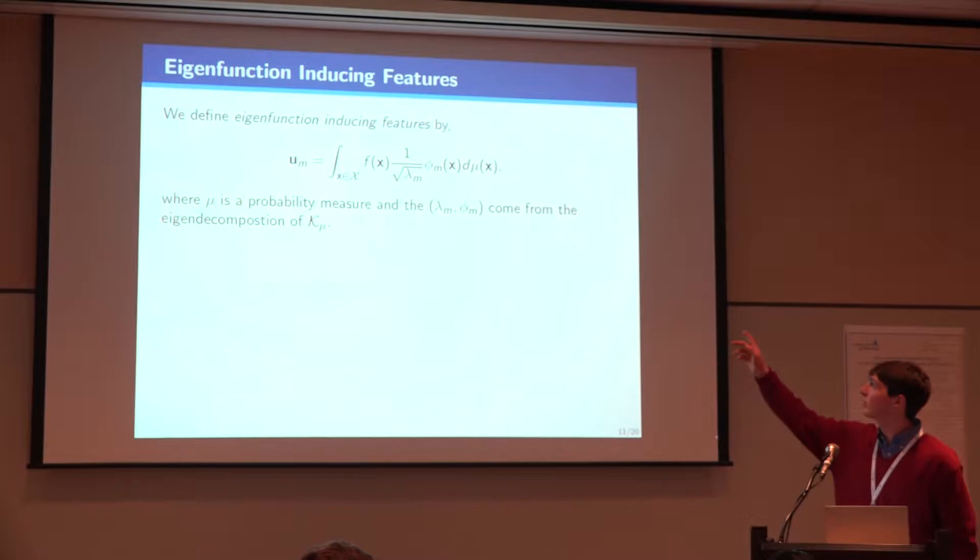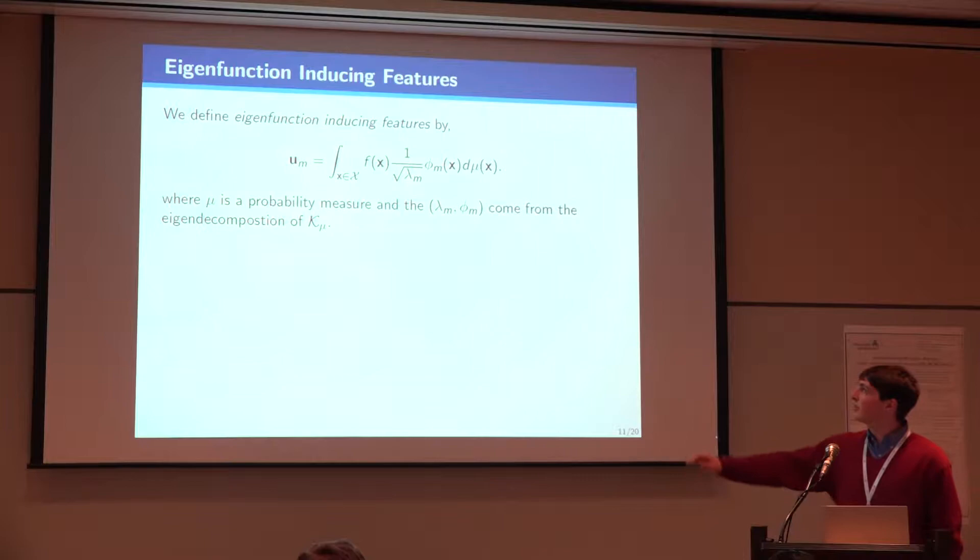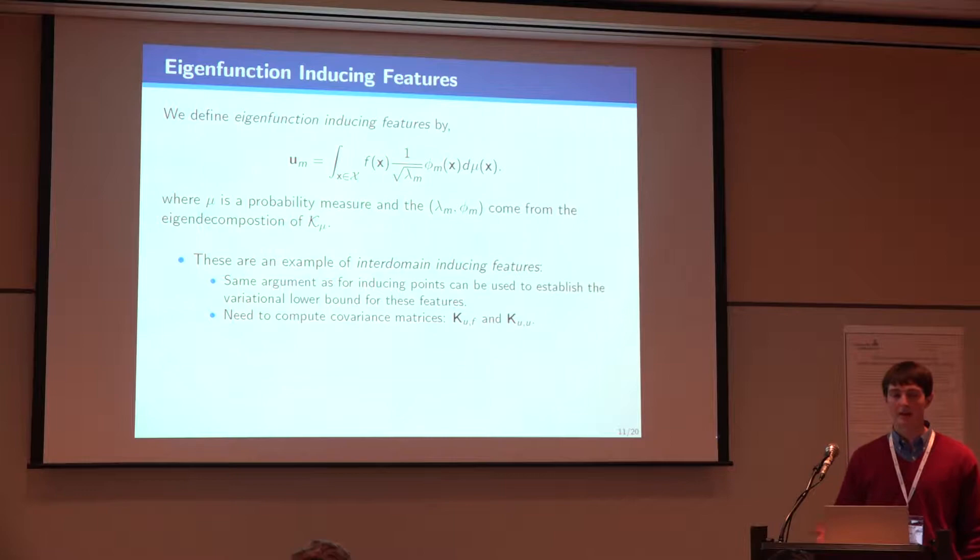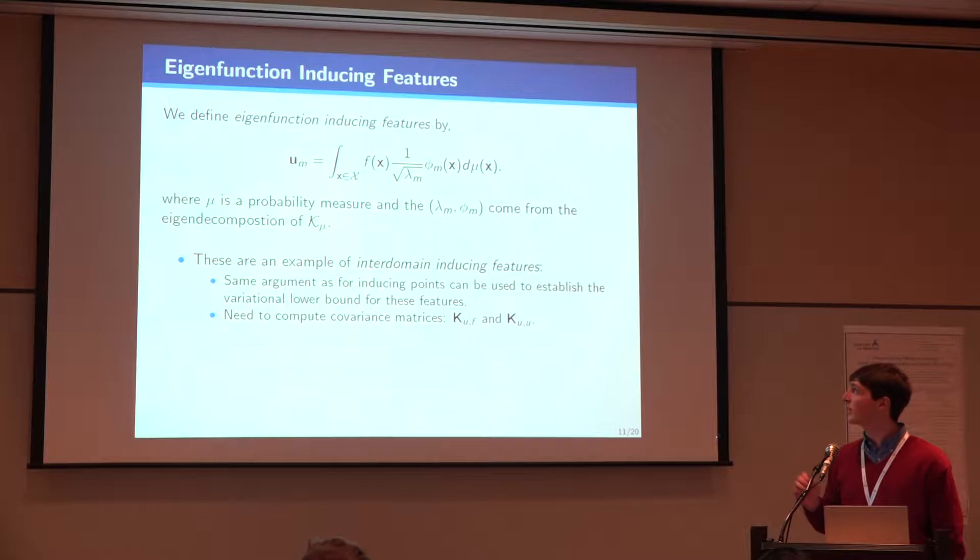We define these inducing features in terms of that covariance operator, now defined with respect to some measure mu and whatever kernel we're trying to approximate. They're basically just an integral of the process against the eigenfunctions of this operator, with some rescaling from the eigenvalues. And basically all the same arguments that are used for standard inducing points just carry over directly when we use inter-domain inducing features. So what we need to do now is compute these matrices of the covariance between the features and the data points and the features and each other.